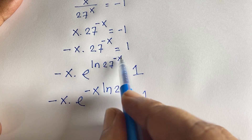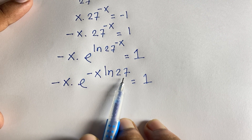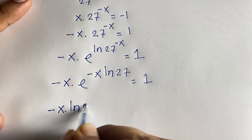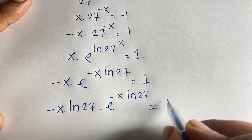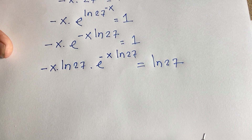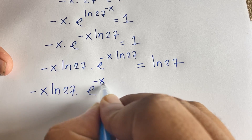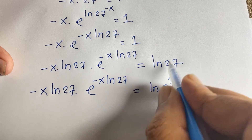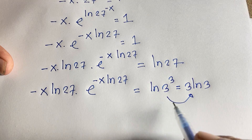After moving the exponent according to logarithm rules, -x · ln27 · e^(-x · ln27) = ln27. Since 27 = 3^3, we have ln27 = 3·ln3, so the right side becomes 3·ln3.